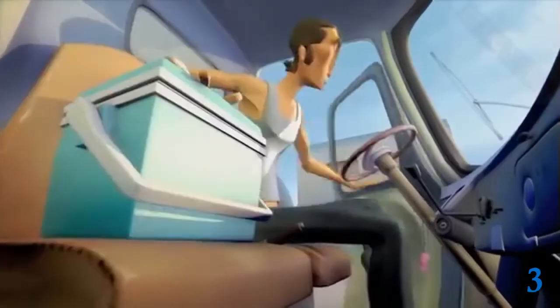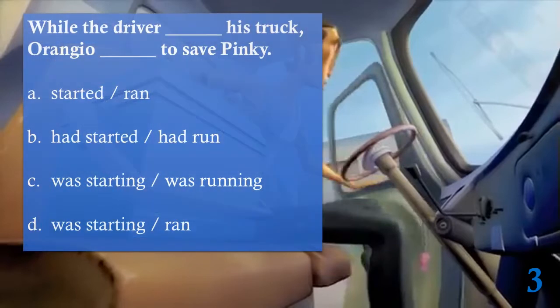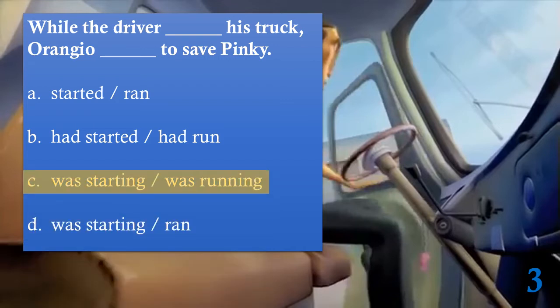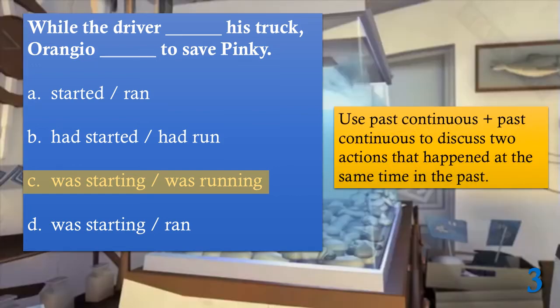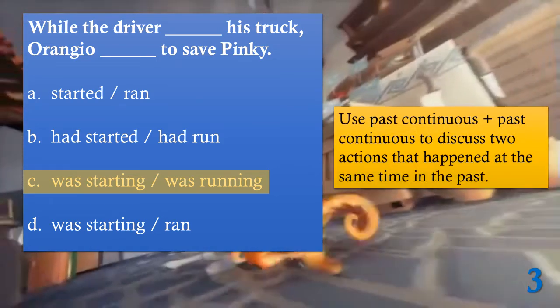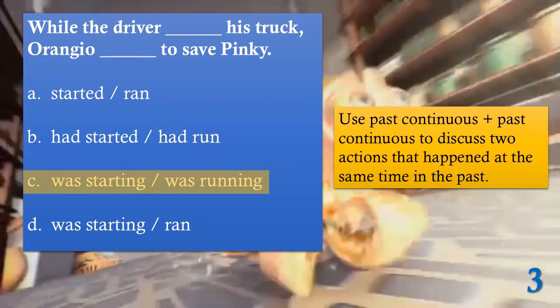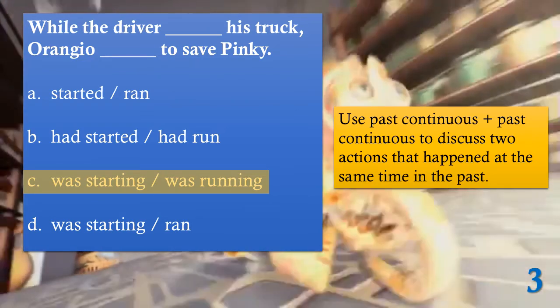After the driver took Pinky, while the driver was starting his truck, Orangu was running to save Pinky. These are parallel actions — no one interrupts the other. They are happening at the same time. So we use past continuous for both parts: two actions happening at the same time in the past, parallel, no one interrupted.